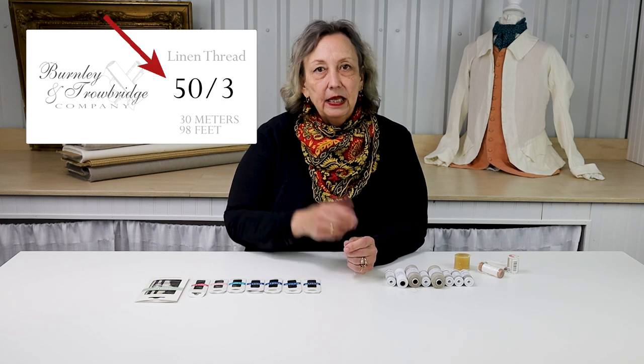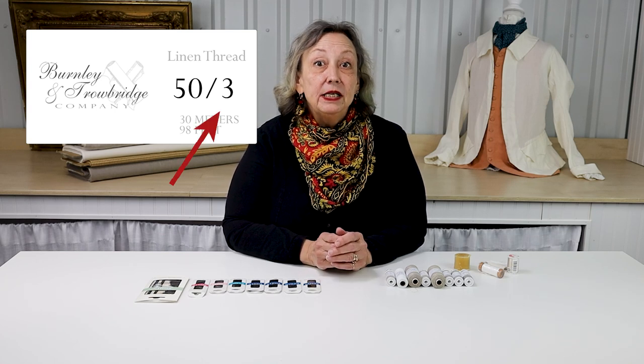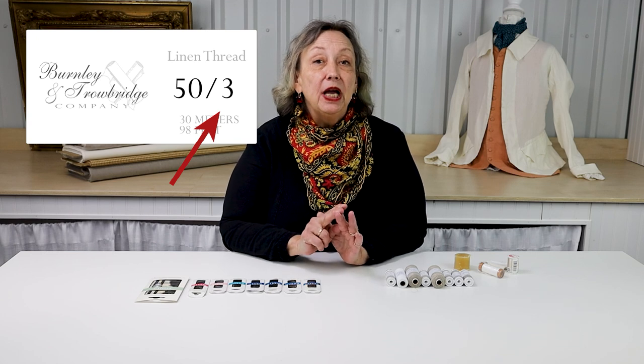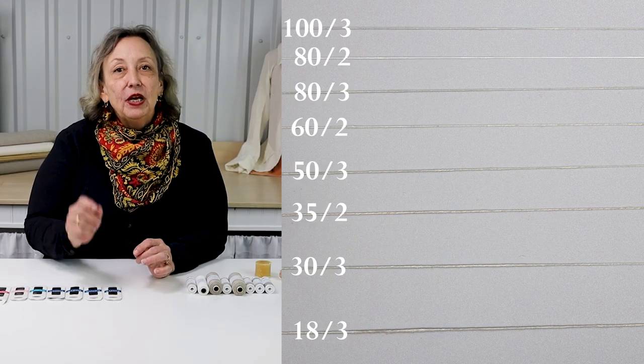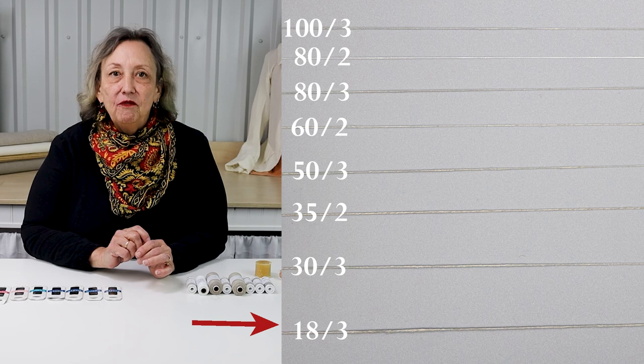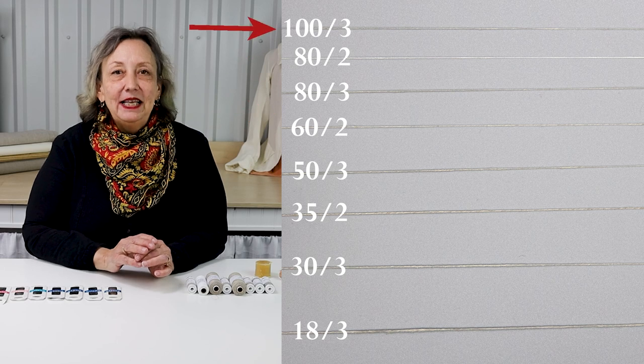The one thing that's a little confusing is the number system. There are two numbers that you will see when you go shopping for thread. That first number will be the size of the thread, and then there'll be a slash mark, and the second number will be the number of plies — how many threads have been put together to make up this one thread. If you look at a very small number, you're looking at a very thick thread. If it's a very high number, it's a thin thread.